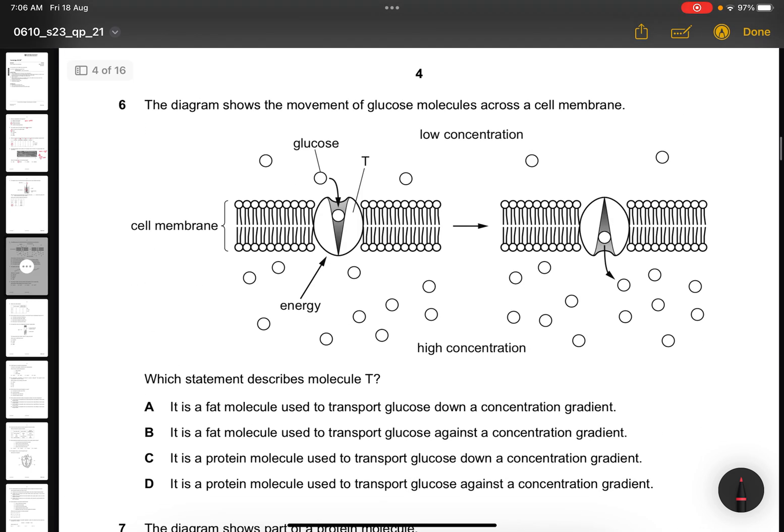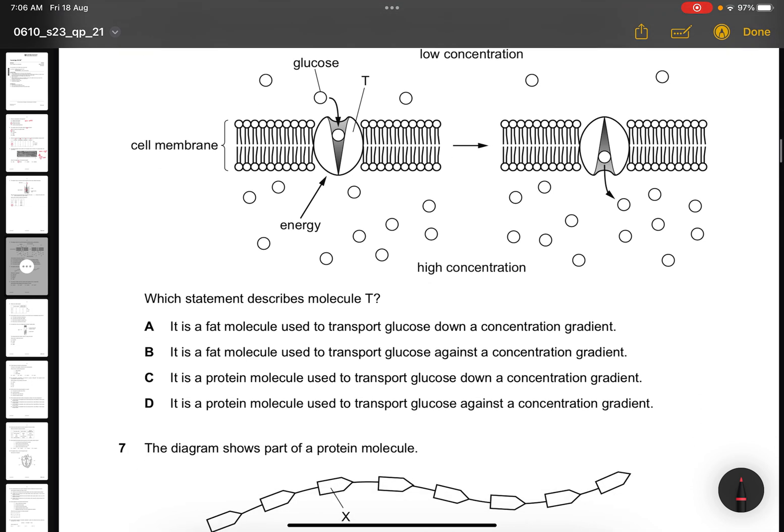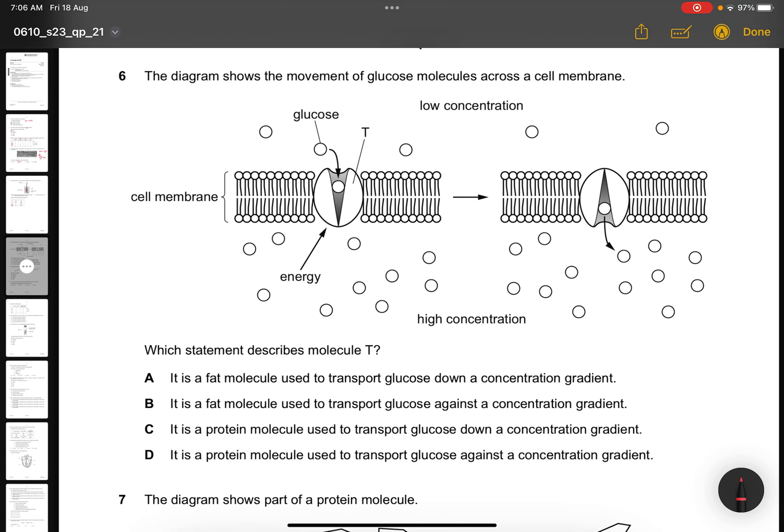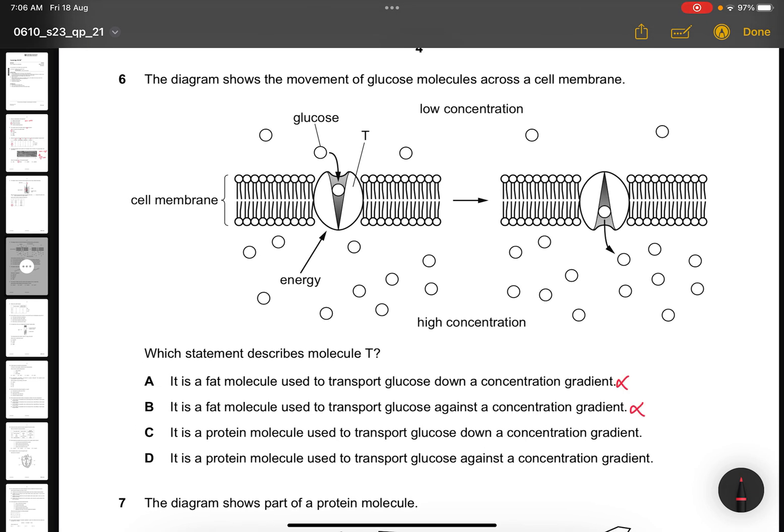Question 6. The diagram shows the movement of glucose molecules across the cell membrane. Which statement describes molecule T? It is not a fat molecule. It's a protein molecule used against the concentration gradient. So the answer is D.